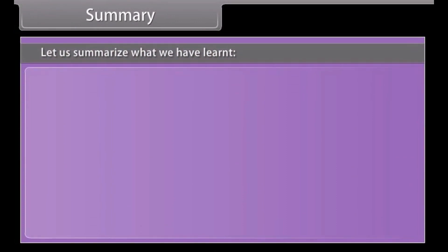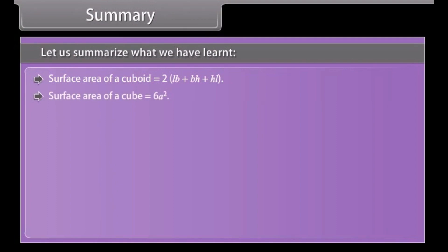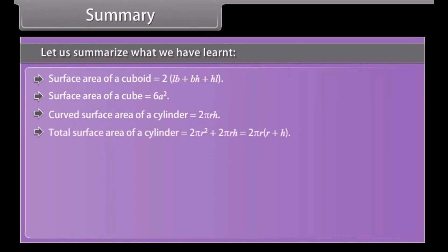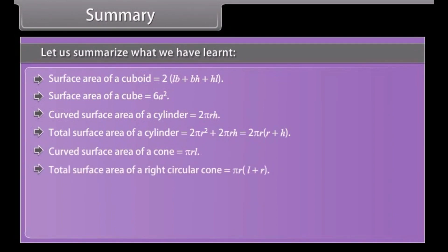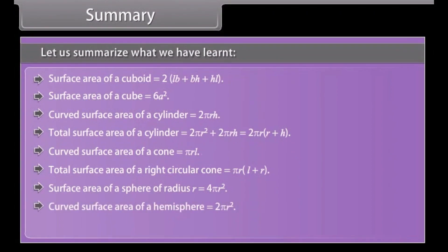Let us summarize what we have learned. Surface area of a cuboid = 2(lb + bh + hl). Surface area of a cube = 6a². Curved surface area of a cylinder = 2πrh. Total surface area of a cylinder = 2πr² + 2πrh = 2πr(r + h). Curved surface area of a cone = πrl. Total surface area of a right circular cone = πr(l + r). Surface area of a sphere = 4πr². Curved surface area of a hemisphere = 2πr². Total surface area of a hemisphere = 3πr².